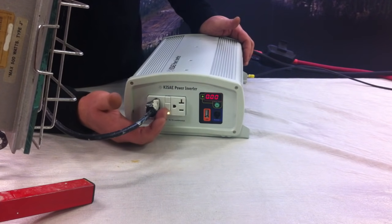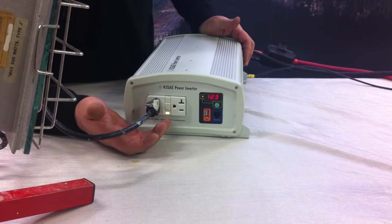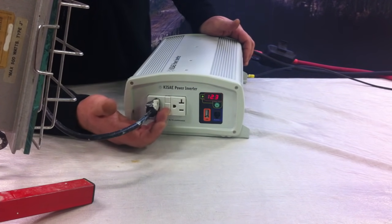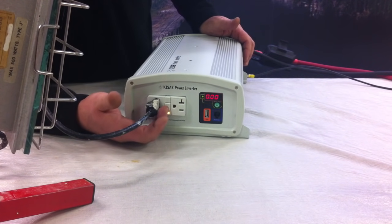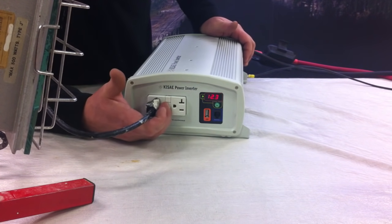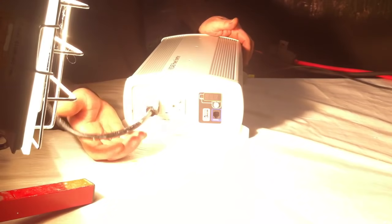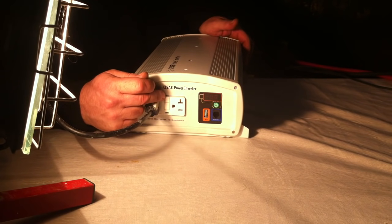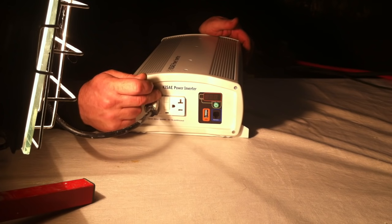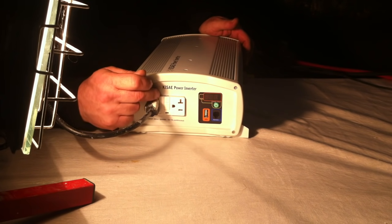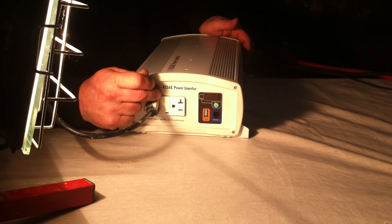One thing you want to be very cognizant of here is on warranty returns. You might get inverters back saying it doesn't work. The first thing you want to check is the GFCI. Make sure it's not tripped. In order to reset the GFCI, you have to be connected to a 12 volt source. The inverter has to be operational in order to reset the GFCI.